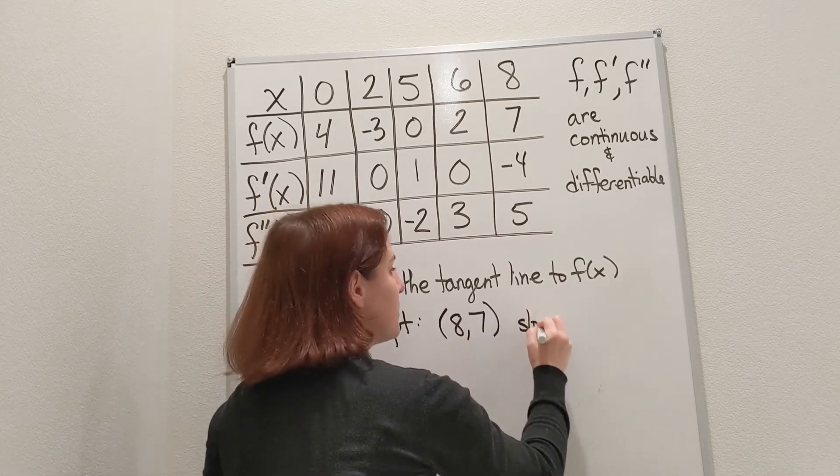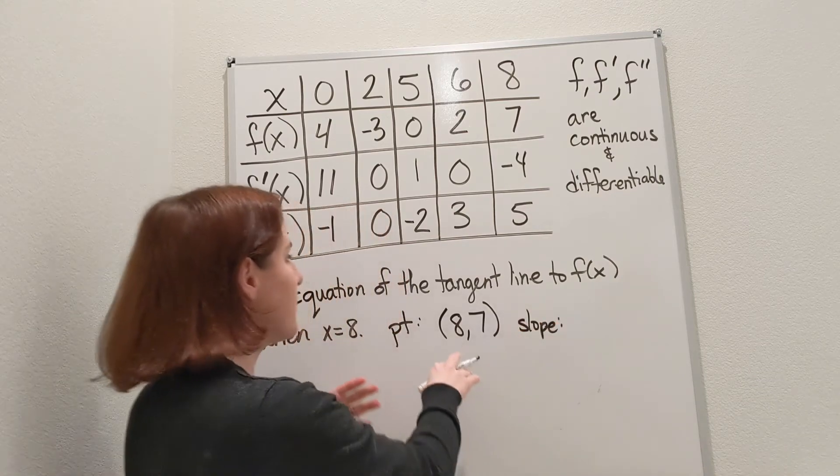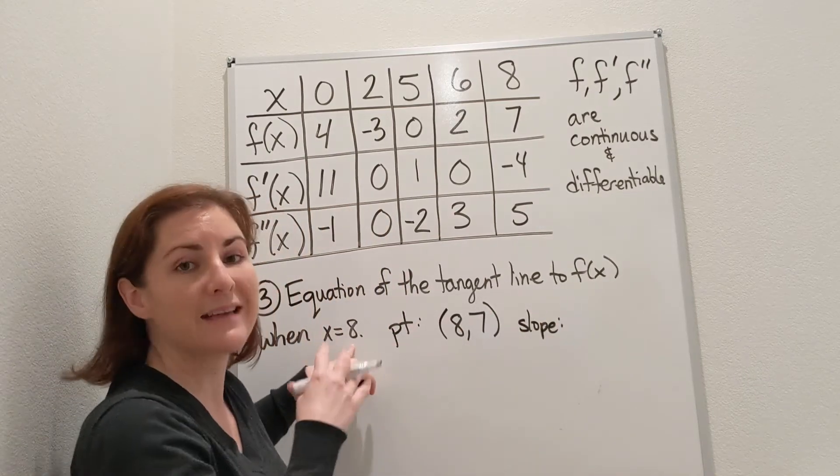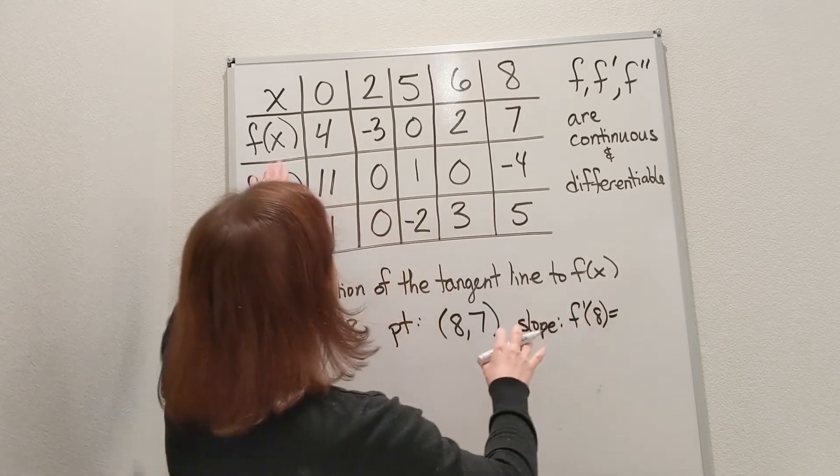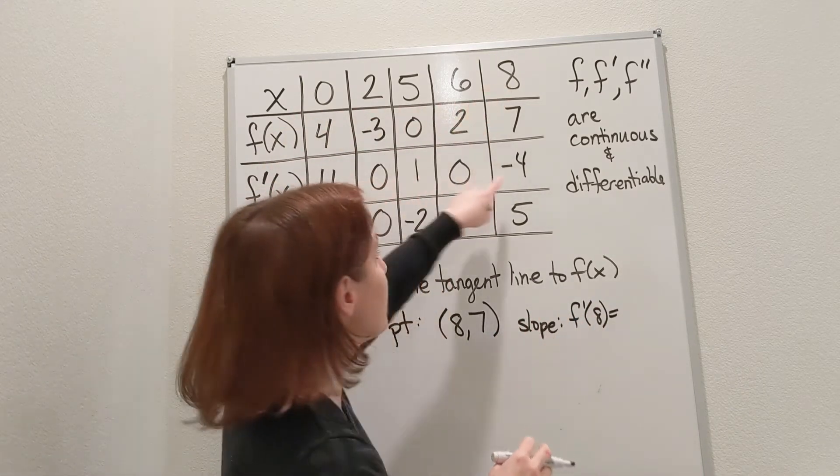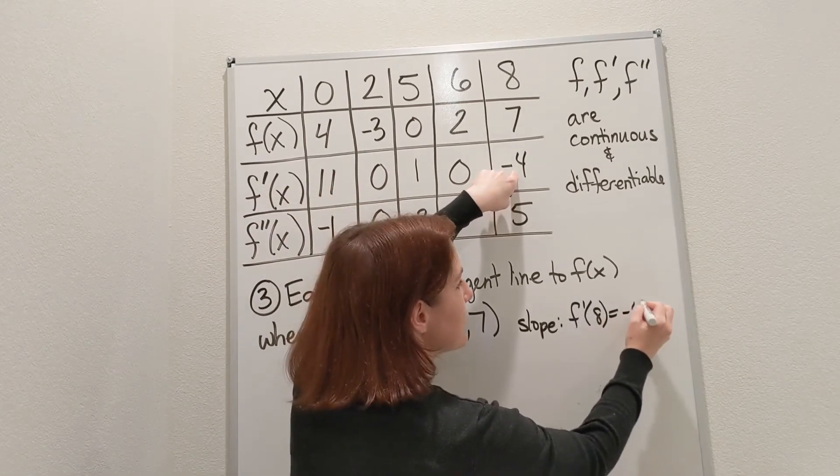And then I also need the slope. The slope comes from the derivative value at x equals 8. So I want to know f'(8). Let's find x is 8 and go to f prime, and that's negative 4. That's going to be the slope.